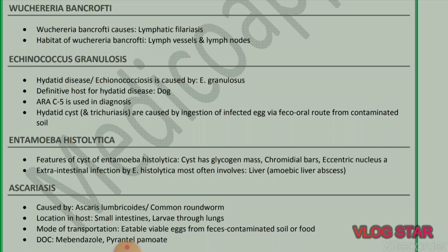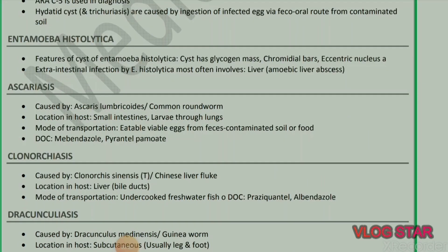Next parasite: Ascariasis, caused by Ascaris lumbricoides, which is a common roundworm. Location in host: small intestine, with larvae passing through the lungs. Mode of transmission: ingestion of viable eggs from feces-contaminated soil.